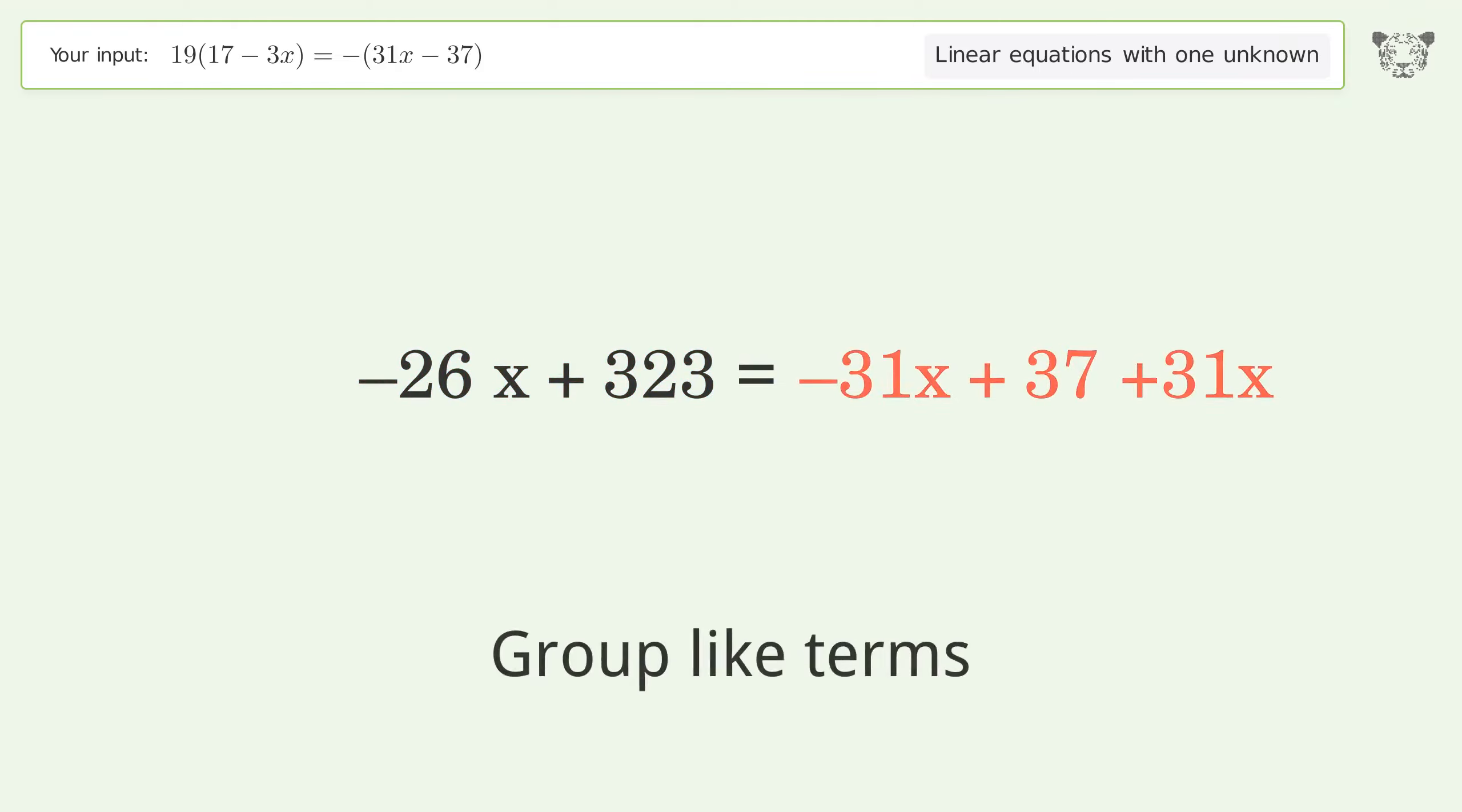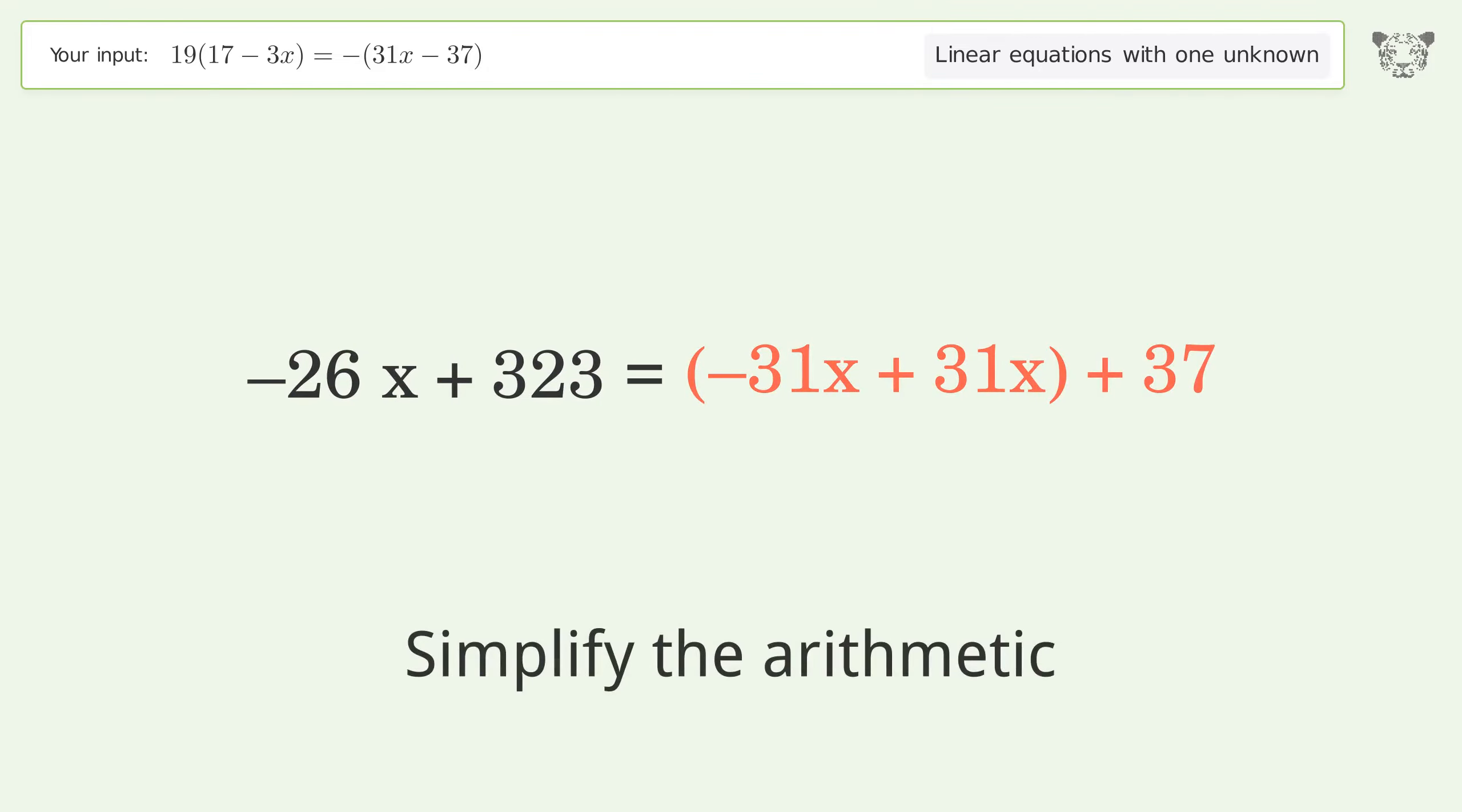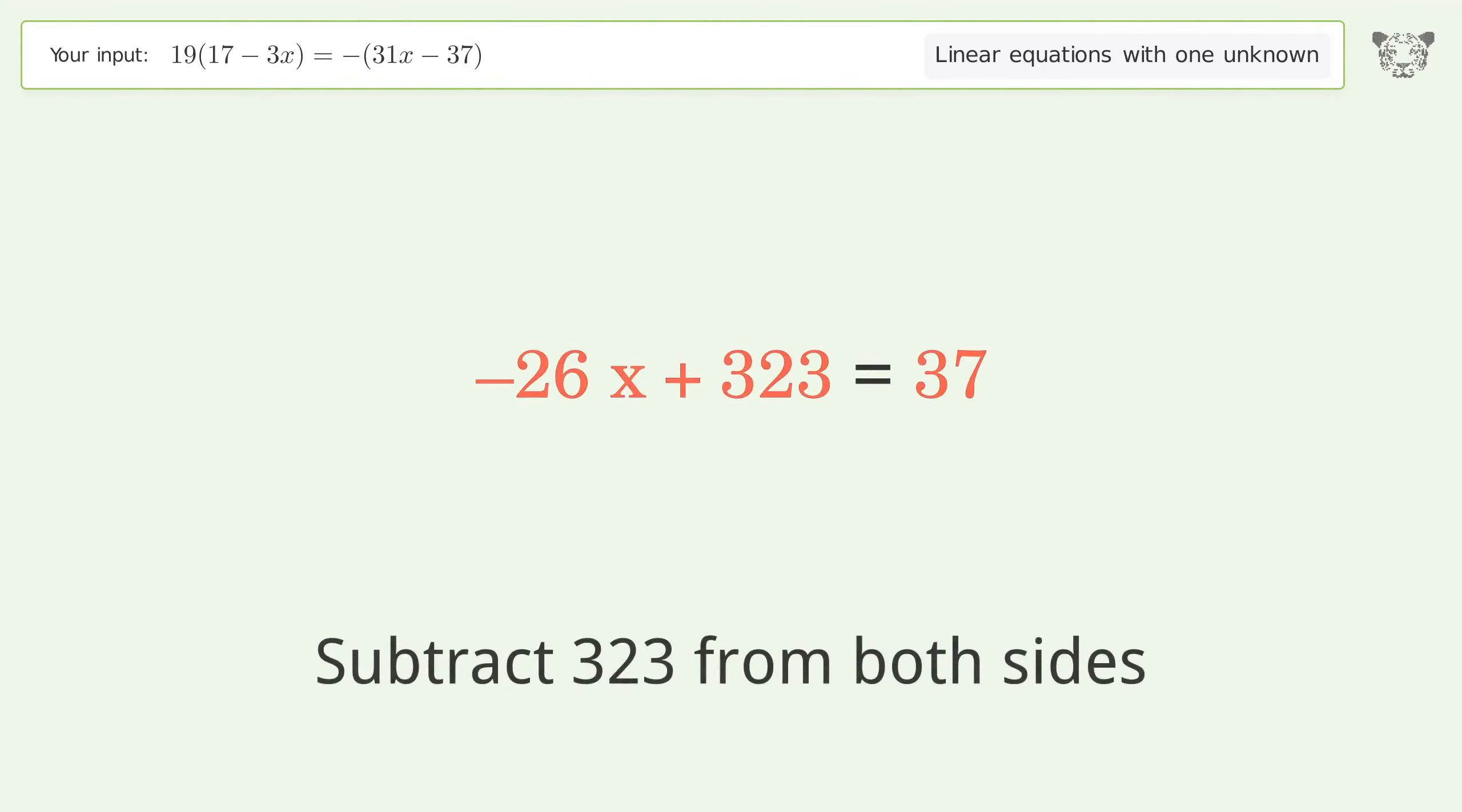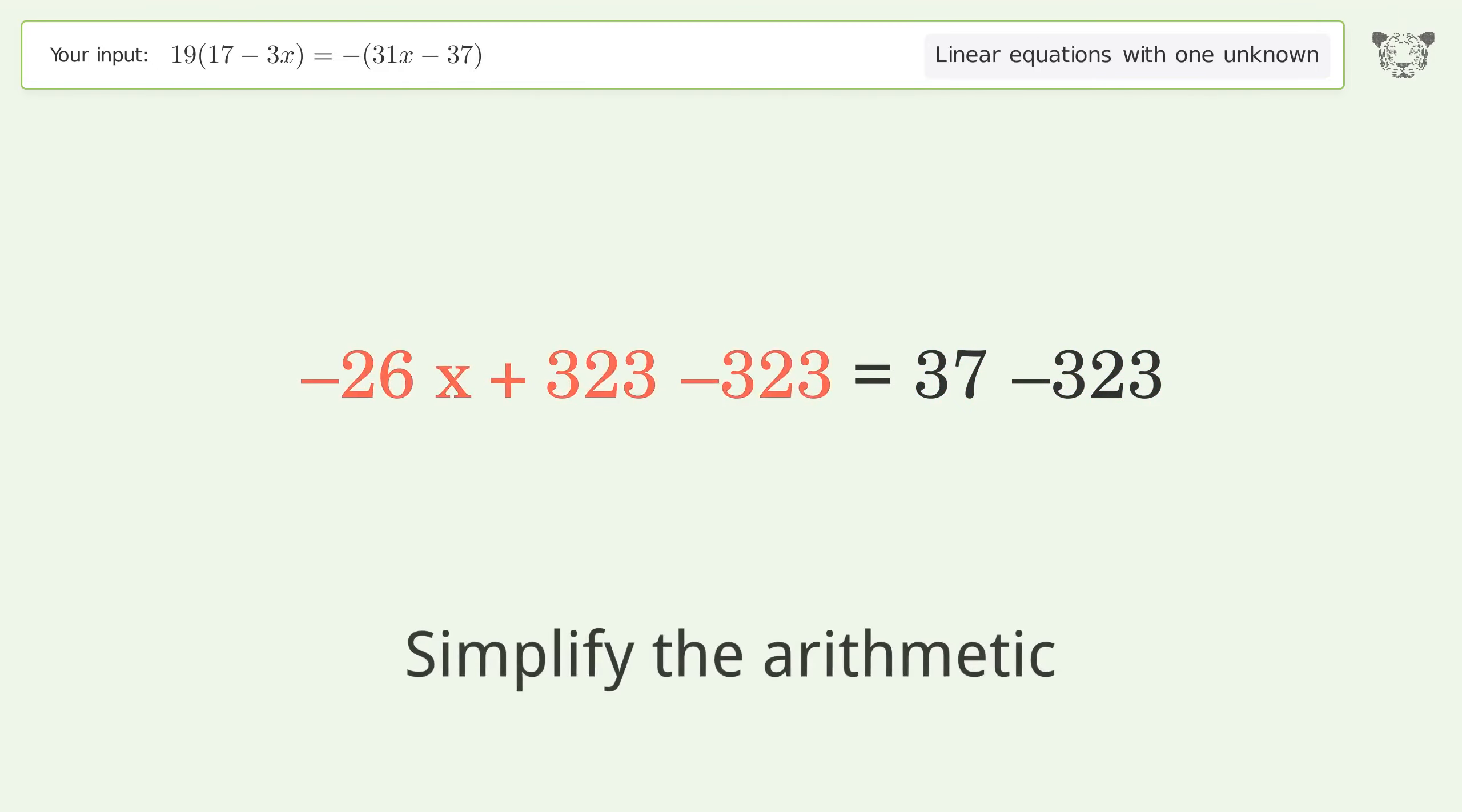Group like terms and simplify the arithmetic. Group all constants on the right side of the equation by subtracting 323 from both sides. Simplify the arithmetic.